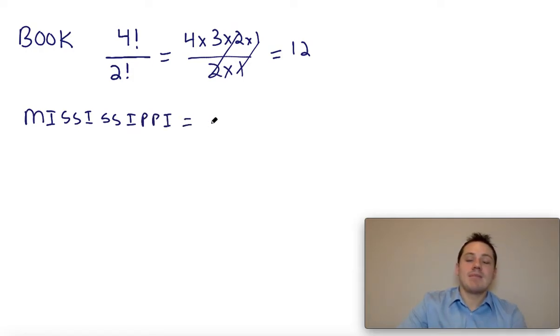And with Mississippi, we have to count how many letters there are. So we can see that there are one, two, three, four, five, six, seven, eight, nine, ten, eleven letters.